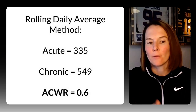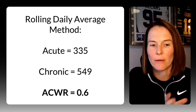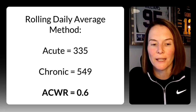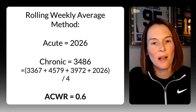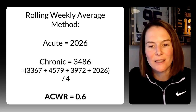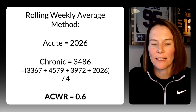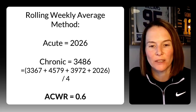Those acute and chronic timeframes are naturally different lengths, so we can't divide the totals directly — otherwise the chronic will always be much higher than the acute. So we might use either a daily rolling average or a weekly rolling average. For example, an acute daily average of 335 divided by a chronic average of 549 gives a ratio of 0.6. Alternatively, using weekly totals, an acute week of 2026 divided by an average of four prior weeks at 3486 also gives a ratio of 0.6.